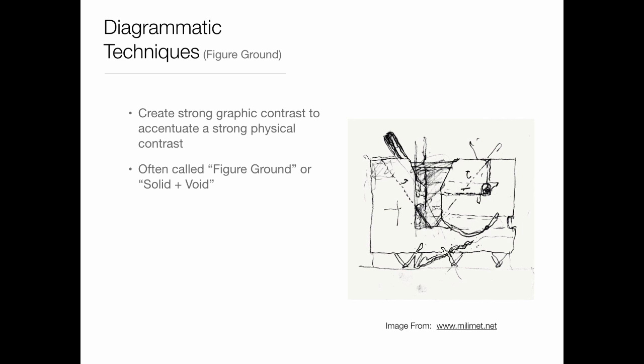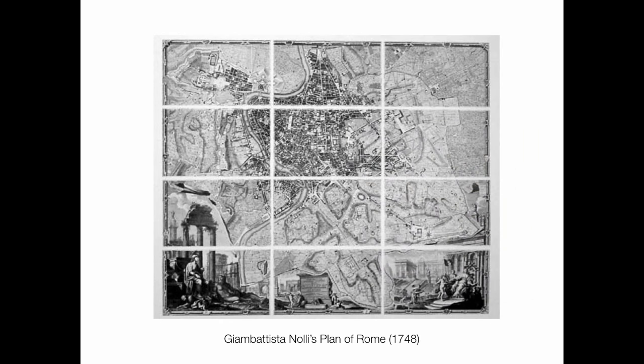Figure-ground is best suited for things with strong contrast — this is public space, this is private space, this is a bathroom, this is a bedroom. It's a stark contrast, shown as a solid and a void: something black, something white. It's one or the other, with no gray area. This strategy goes all the way back to Giambattista Nolli's plan of Rome in 1748.